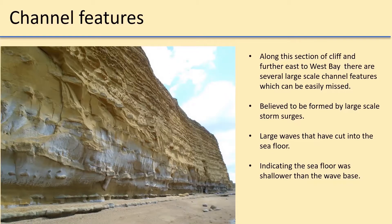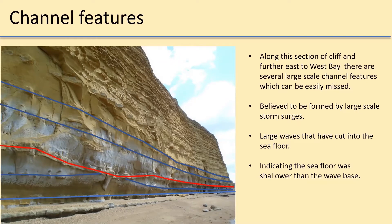To clarify: in general the relatively flat-lying Bridport Sandstone layers, shown in blue, are occasionally altered by channel features seen here in red. This indicates that the sea floor must have been shallower than the amplitude of the wave base during times of large storms.